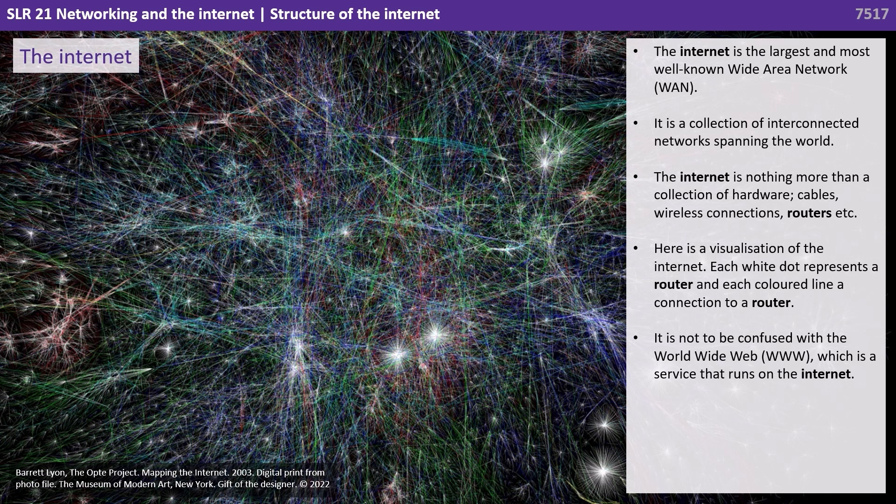Here is a visualisation of the internet. Each white dot represents a router and each coloured line a connection to a router. It is not to be confused with the world wide web, which is simply a service which runs on the internet.